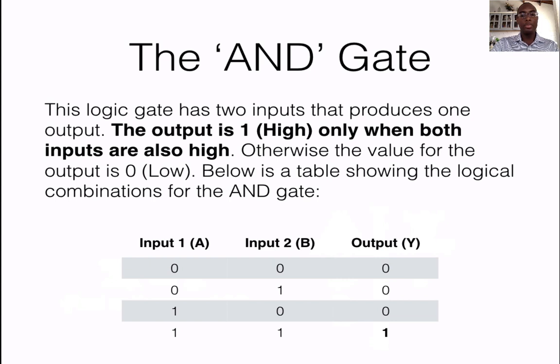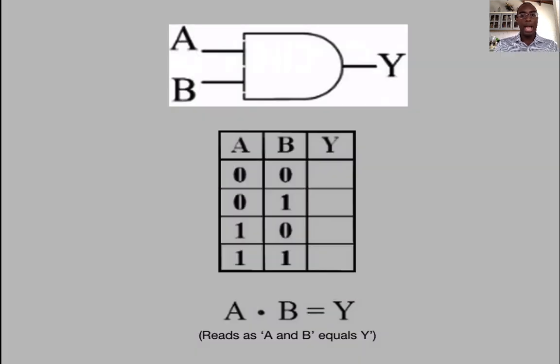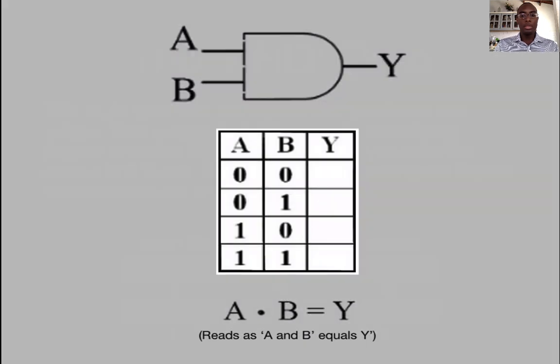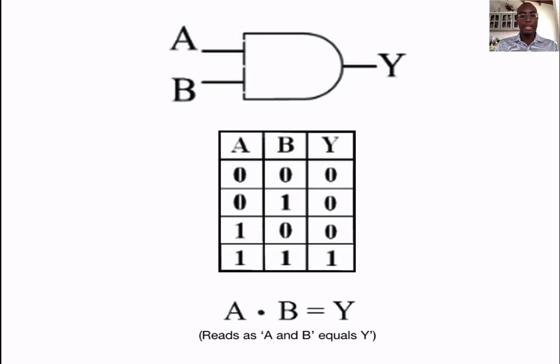You have 0, 0 for input produces a 0 for output. You have 0, 1 produces another 0, 1, 0 producing another 0. The only instance where you have an output of 1 is when both signals coming in have input of 1. In summary, this is what an AND gate looks like. You have the A and B terminals. 0, 0 produces a 0, 0, 1 produces another 0. 1, 0 is also 0 but 1, 1 produces a 1. This is the AND gate.